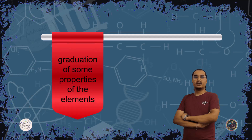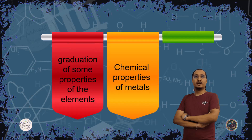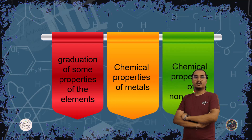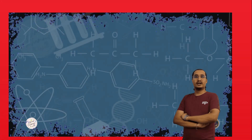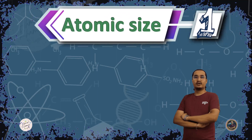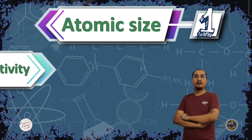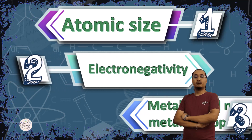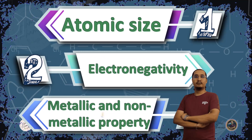First, we will see the graduation of some properties of elements. Then, we'll discuss the chemical properties of metals and non-metals. The properties we're going to study are atomic size, electronegativity, and metallic and non-metallic properties.